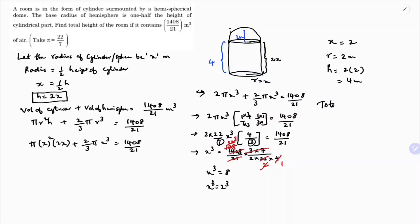The total height of the room is the height of the cylinder plus the radius of the hemisphere (since the hemisphere's height equals its radius): 4 + 2 = 6 meters. The total height of the room is 6 meters.